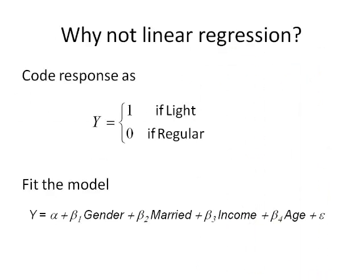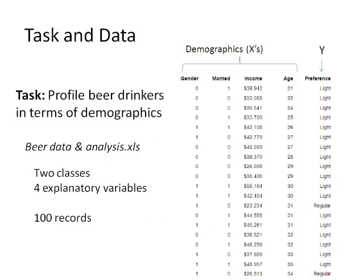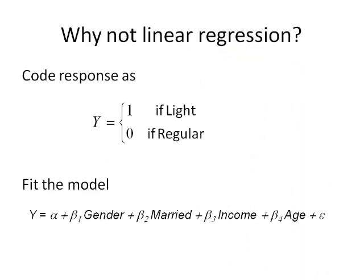So why can't we just do linear regression? I'll take this data, turn the outcome into a dummy 0/1, and run it. Will it run? Yes — and that's the bad news. Because if the software had said it can't run this, you'd know you can't do linear regression. The bad news is you will get an output and it will look just fine — the coefficient table looks normal.